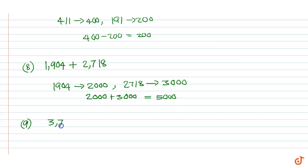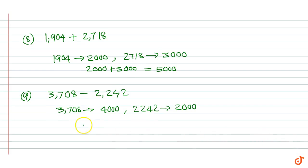Example 9: 3708 minus 2242. 3708 rounds up to 4000, 2242 rounds up to 2000. Therefore 4000 minus 2000 is equal to 2000.